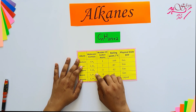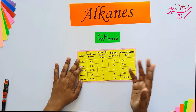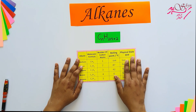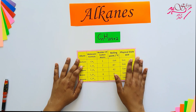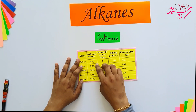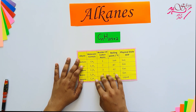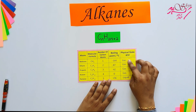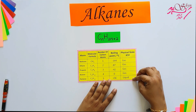Look at this table. As you can see, the boiling point is increasing as the number of carbon atoms increases. The state also changes from gas to liquid.